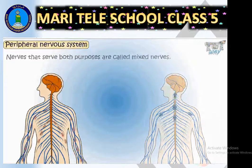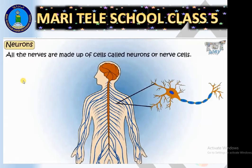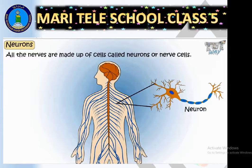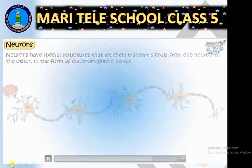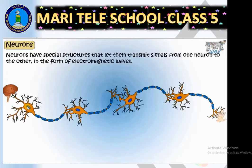All nerves are made up of cells called neurons or nerve cells. Let's talk about the structure of the neuron. Neurons have special structures that let them transmit signals from one neuron to another in the form of electrical electromagnetic waves.